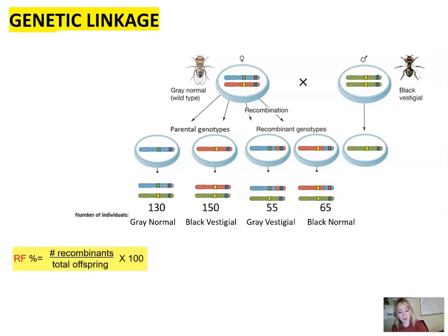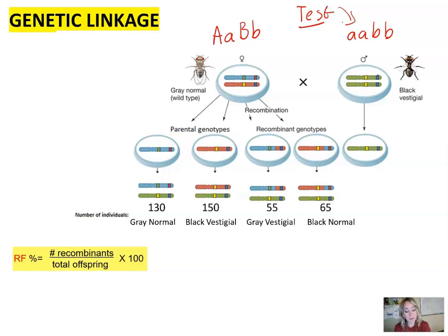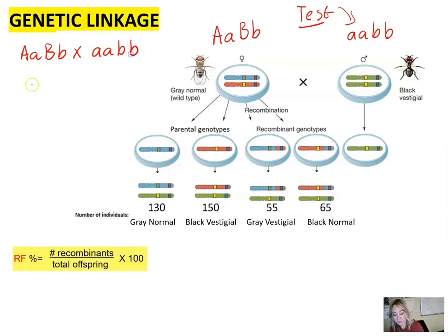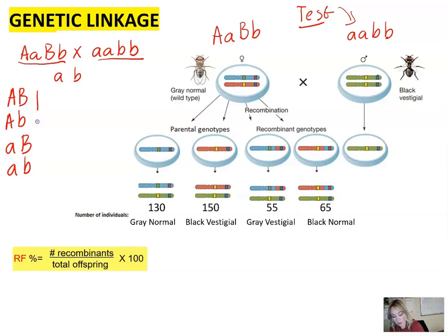I'm going to assign the following symbols: gray body and normal wings get capital A capital B, and black vestigial gets little a little b. Remember this is a test cross, which is why we always cross the organism with homozygous recessive. If this pattern follows Mendelian genetics, we're supposed to get a ratio of 1:1:1:1. If we cross heterozygous for both traits with homozygous recessive, we get four gamete combinations from the first parent and only one type from the second, and fusing the gametes gives us the following genotypes.